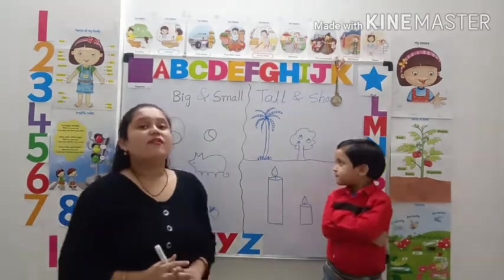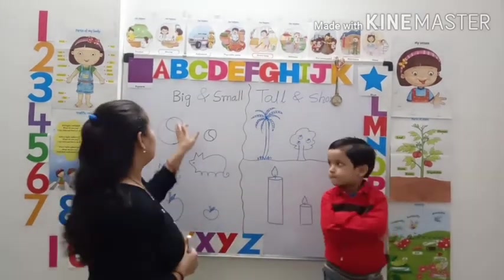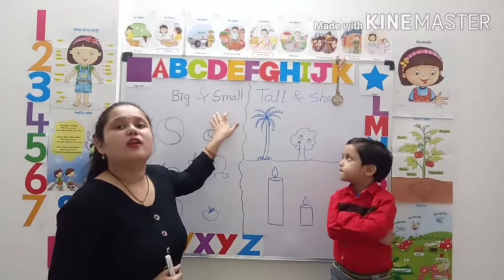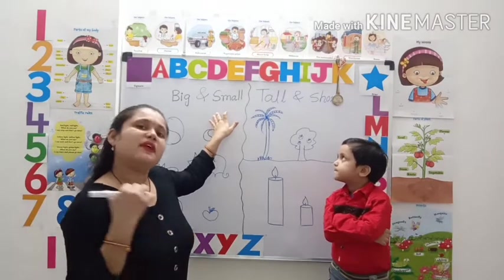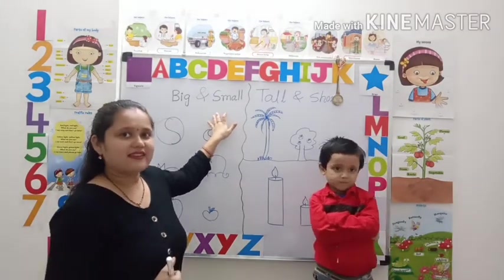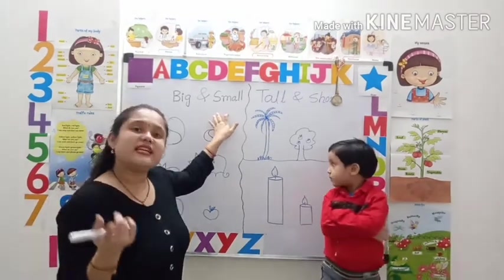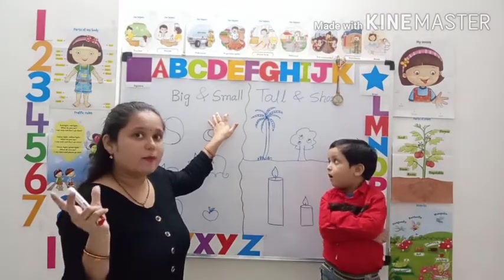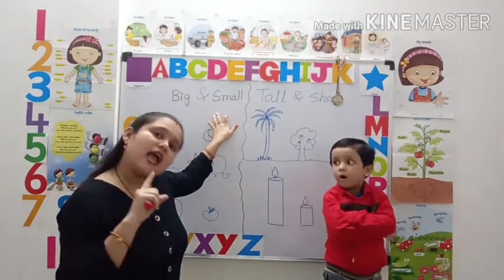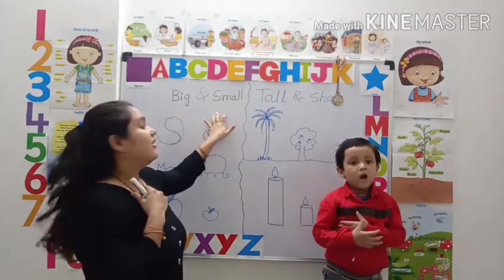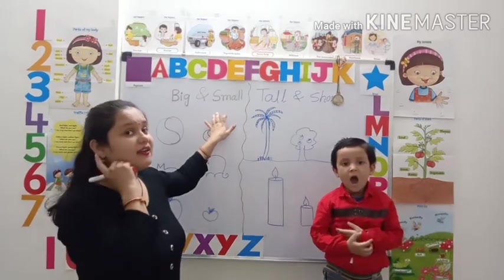We have learned big and small topics previously. Now you can easily identify big objects and small objects. Let's start.